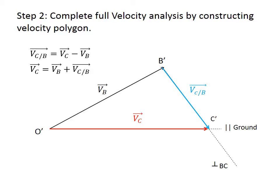By measuring the scaled velocity polygon, we obtain the velocity of point C and the relative velocity of C versus B.